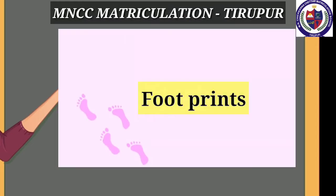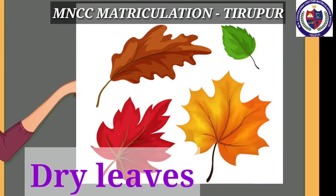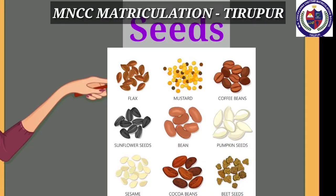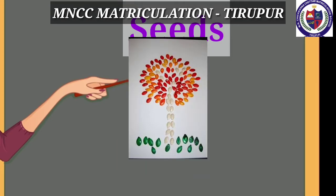The next image is a footprint — here, the same size of footprint is used to make a pattern. Dry leaves: you can take the same size or shape of dry leaves to make a pattern. Seeds are also used to make a pattern, like the given image. You can create your own pattern with seeds.